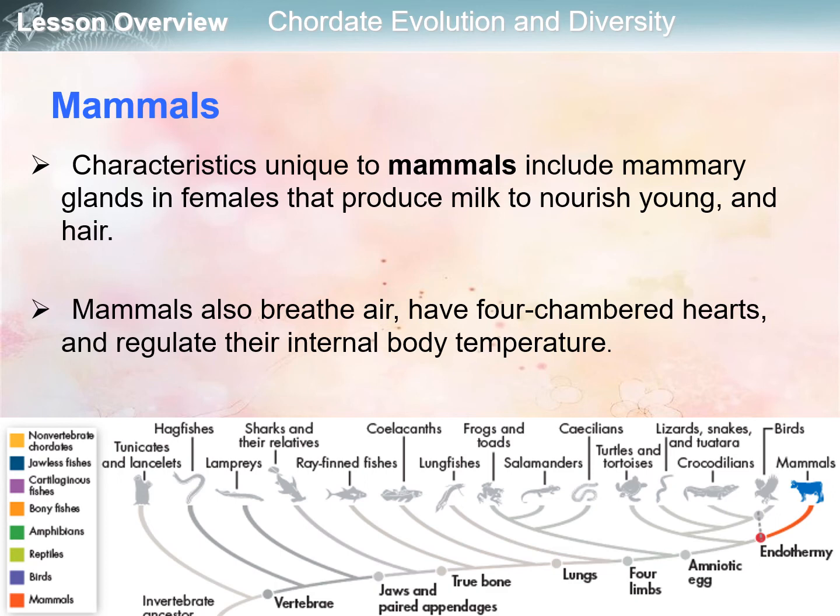Now let's move on to mammals. Characteristics unique to mammals include mammary glands in females that produce milk to nourish the young, and having hair. Mammals also breathe air, have four-chambered hearts, and regulate their internal body temperature — they are also endotherms. After the dinosaur era comes the birds, and then lastly the mammals, including humans and other animals.